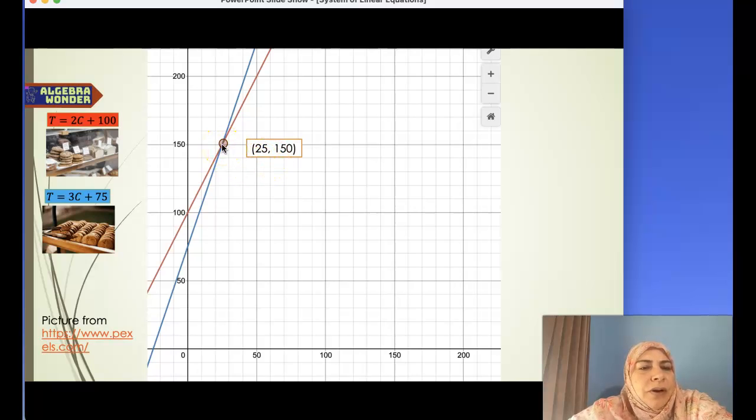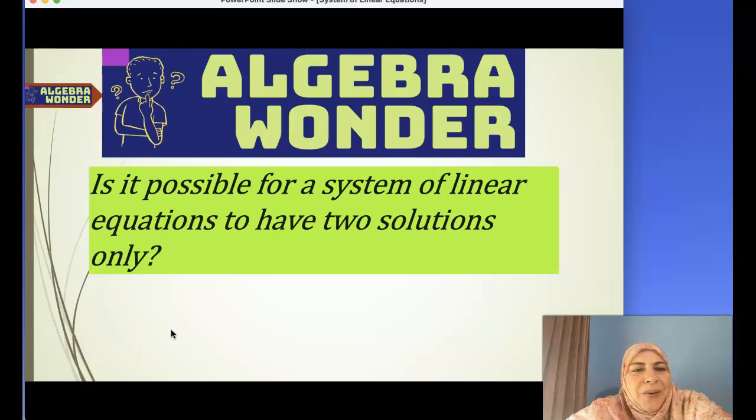But what if the basketball team buys only 20 dozen? For 20 dozen, the blue company is cheaper. What if they buy more than 25, like 50 dozen? Then the red company is cheaper. That's why it's helpful to use a system of equations in this scenario to compare and get the most efficient price.